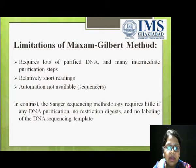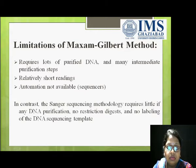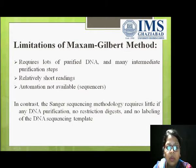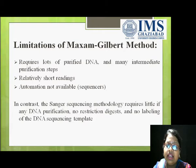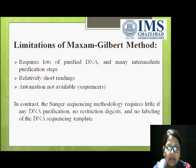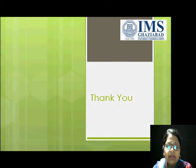There are certain limitations of the Maxim-Gilbert method. It requires a lot of manipulation with the DNA, and we can only read relatively short sequences. Automation of this technique is not available. In contrast, the Sanger sequencing method requires only a little DNA purification, no restriction digestion, and no labeling of DNA. These are the main limitations of the Maxim-Gilbert method. Thank you.